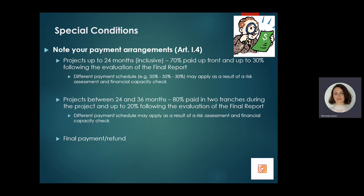For projects of duration over 24 months, 80 percent of the awarded grant will be paid in two installments during the project — the first 40 percent upon signature of the grant agreement and the second 40 percent towards the second half of the project. Up to 20 percent is then paid upon receipt and successful evaluation of the final report. The national agency has 30 days from signature of the contract for the first payment and 60 days from receipt of the final report for the final payment.